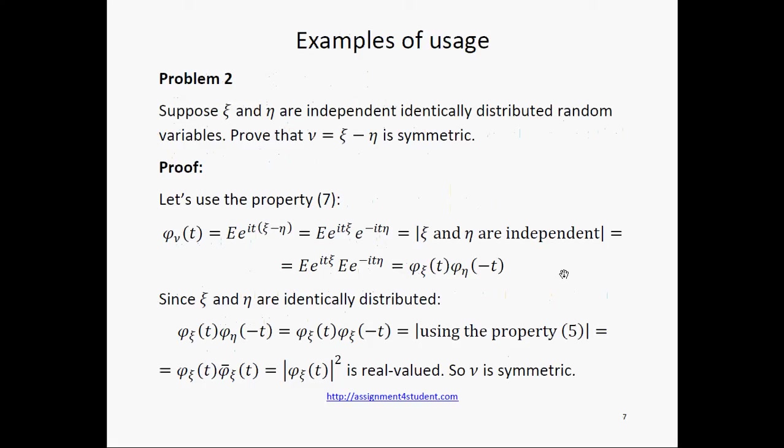Since xi and eta are independent, we get the product of expected values. Since xi and eta are identically distributed random variables, we get phi xi equals phi eta, and we can replace the second multiplier.